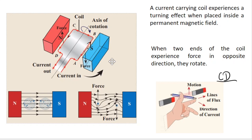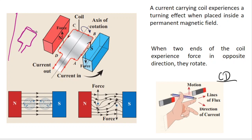Let us place a current-carrying coil in the magnetic field. Let us assume this is a single conductor — you can make a coil from a single conductor. In the coil, there are two sides: the first side is A, B and the second side is C, D.